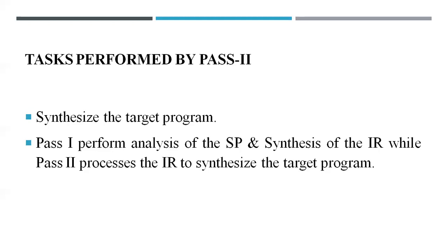The inputs to Pass 2 also include the mnemonic table and the intermediate code (IR). So by considering the symbol table, literal table, pool table, and intermediate code, Pass 2 performs synthesis and produces the target program as output. This covers the tasks performed by Pass 2, which together with Pass 1 form the complete two-pass translation process.